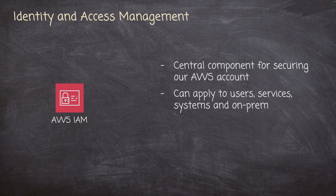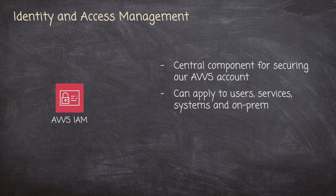We can apply IAM to users — that's people like us that would log into our systems and accounts. We could also apply it to services. For example, we could have a Lambda function that inserts a row into DynamoDB. We could give that Lambda function permission to do that and assign that role to it. Therefore, it would be able to do that.